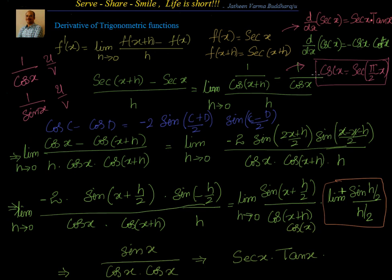In the next session we will see how to find from the first principle the derivative of cosecant x. But I want you to try out this: take u as 1 and v as cos x, apply the u by v formula, and find the derivative. See whether you are getting derivative of secant x is secant x into tan x or not. So I will catch you in the next session. Thanks for your time.